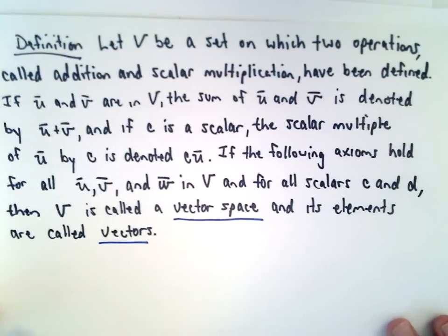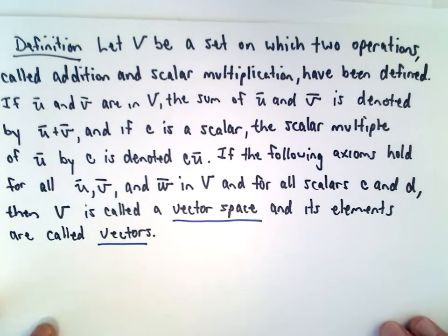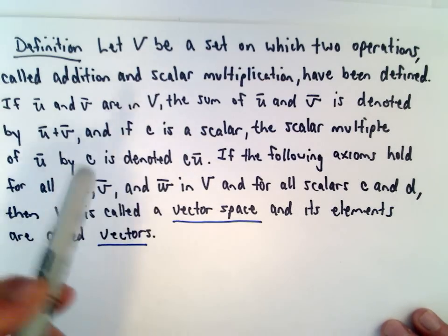So, here's the definition. I'm not going to say this every time, but just know that letters at the beginning of the alphabet, A B C D, those are going to refer to scalars. Letters at the tail end of the alphabet, U V W X Y Z, those are in general going to refer to vectors. Okay, so here's the definition.